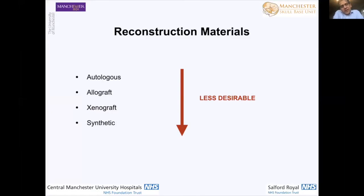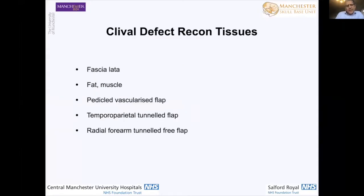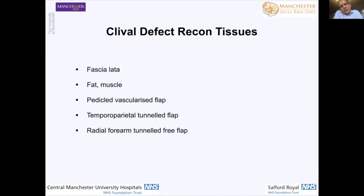Your best options for reconstruction are always going to be autologous materials. Least favourable are synthetic materials because of a risk of infection and a risk of extrusion. Your available tissues for clival defect reconstruction — your go-to materials such as fascia lata; fat as an additional layer; muscle, also very useful. If you're harvesting fascia lata from a patient's thigh, other materials readily available from that site are fat and muscle, so you could contemplate harvesting everything needed at one donor site. Then think about your pedicled vascularised flap — our go-to being an extended nasoseptal flap based on the posterior septal branch of the sphenopalatine artery.